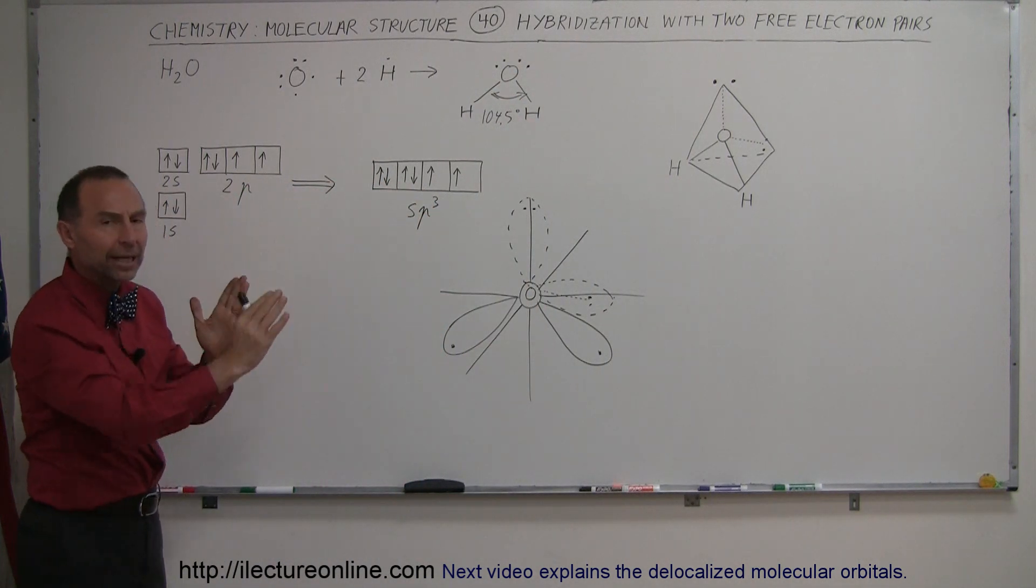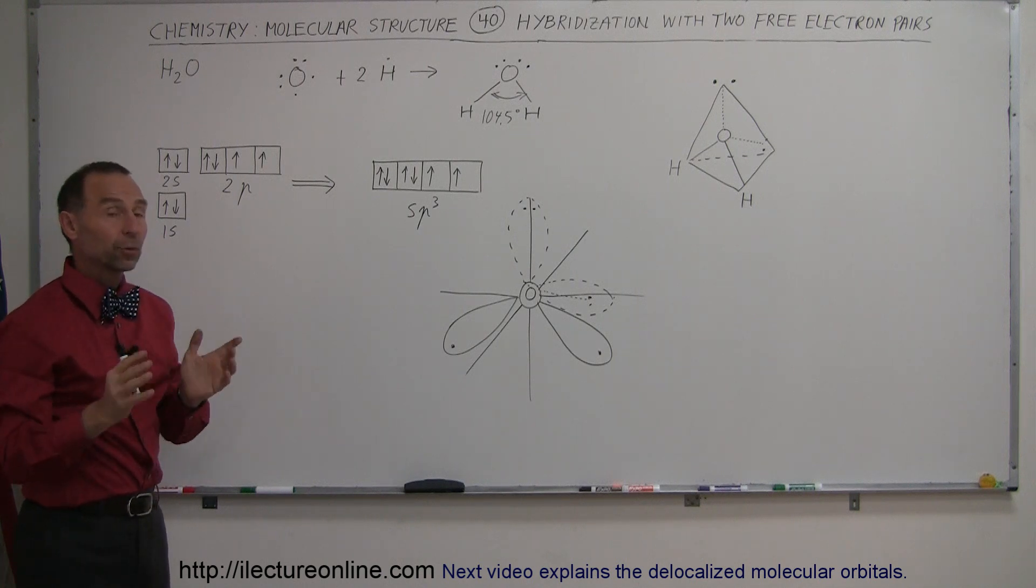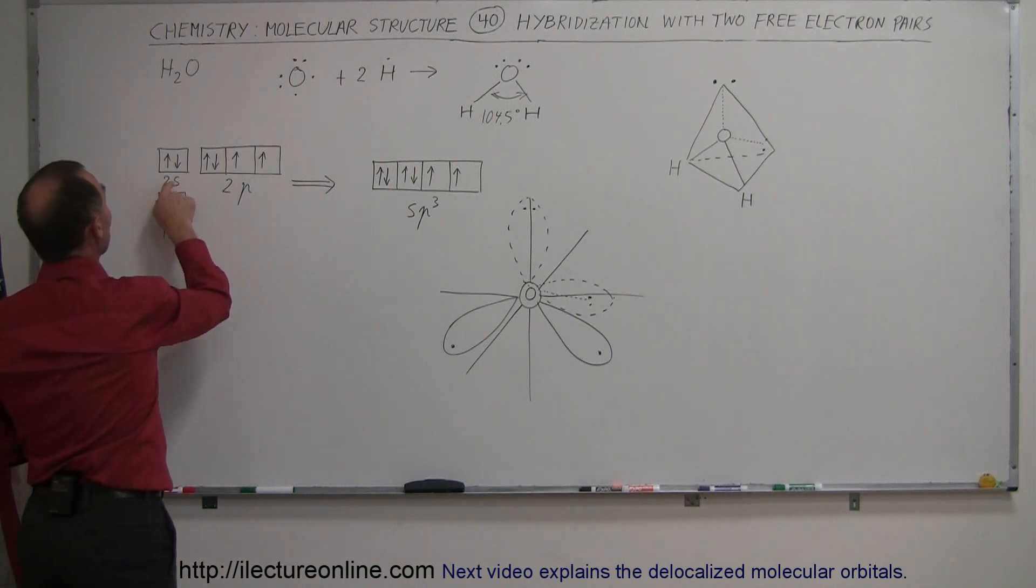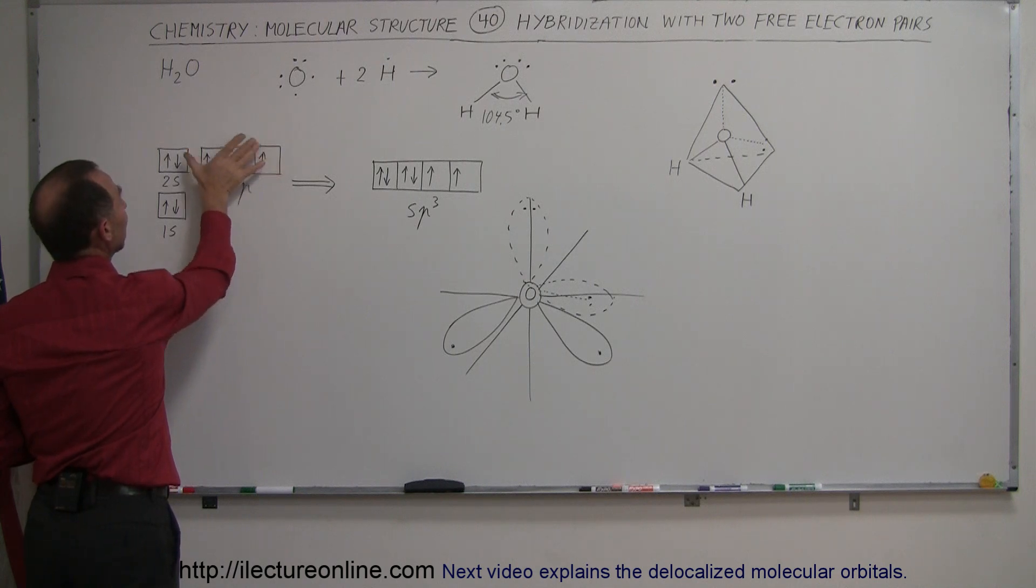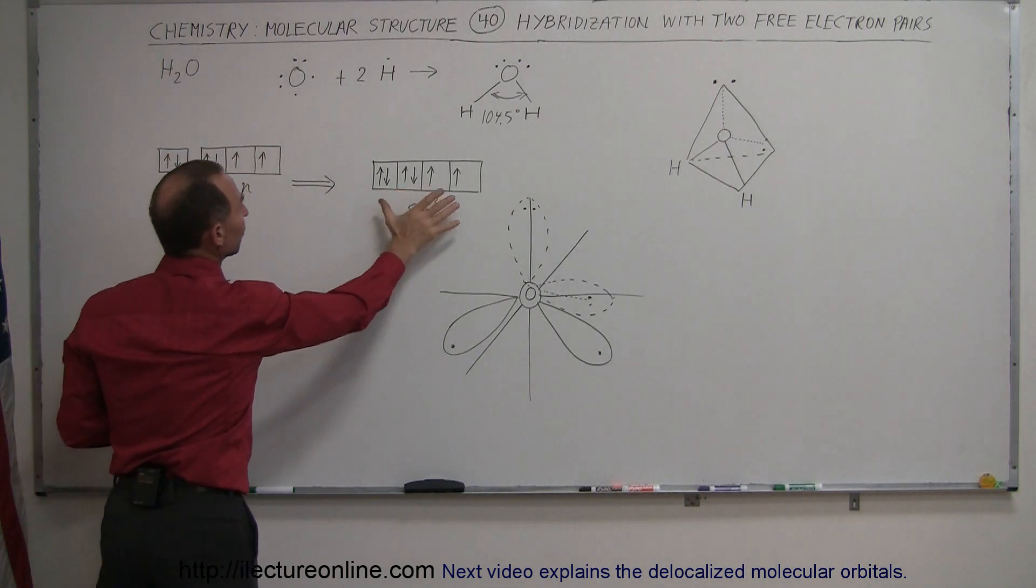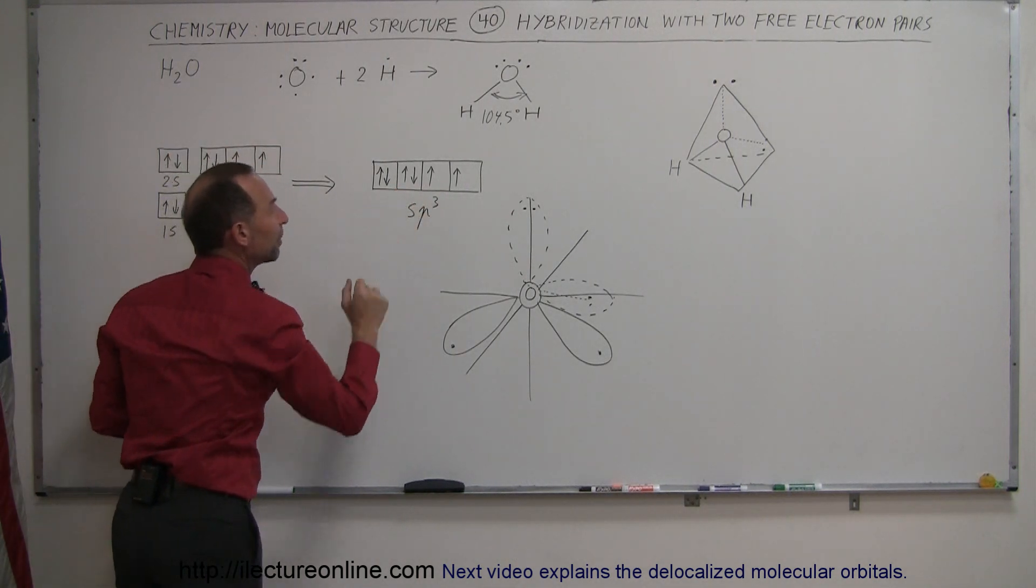We tend to think that this is in a planar shape, but not at all. What happens is the 2s orbital and the three 2p orbitals together form a hybridization set of orbitals called the sp3 orbitals.